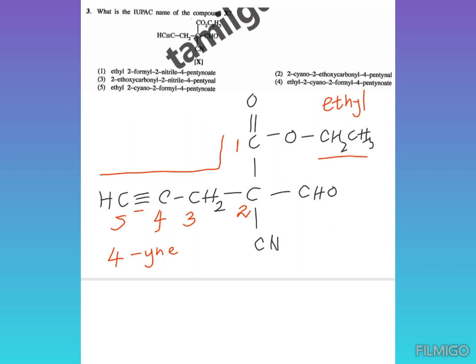Then we name the substituent groups. There are two: this one and this one. They are attached to the second carbon atom. We name this group as 2-formyl and this one as 2-cyano. When writing these substituent groups, we arrange them in alphabetical order - that means we write 2-cyano first, and after that we write 2-formyl. Then the functional group is named as oate.